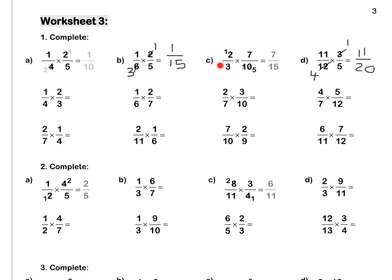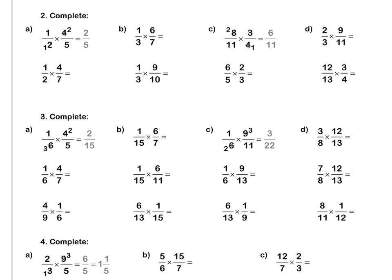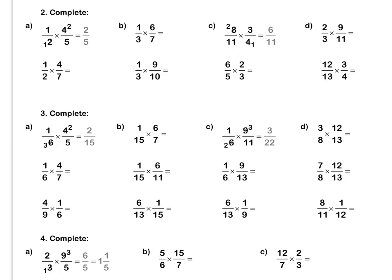Press pause to complete questions C and D by yourself. Question 2: in this sum, we simplify the 4 and the 2 by dividing them both by 2, leaving 2 at the top and 1 at the bottom. We multiply out to get two fifths.